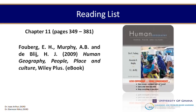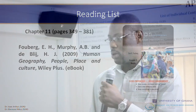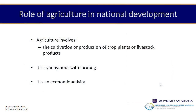That's Fulberg, Murphy, and De Bly, Human Geography: People, Place, and Culture. So to begin with, we will look at the role of agriculture in national development. Agriculture plays a major role in any country's development.